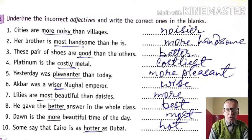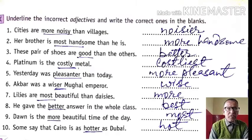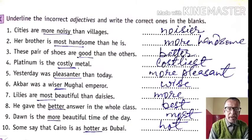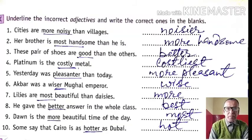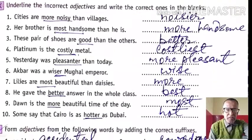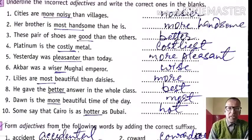Question 4: Platinum is the costly metal. 'The' is used, so we use superlative degree — platinum is the costliest metal. Question 5: Yesterday was pleasant than today. For comparative degree it will be 'more pleasant', so: yesterday was more pleasant than today. Question 6: Akbar was a wiser Mughal Emperor. No comparison is being made here, so we use positive degree — Akbar was a wise Mughal Emperor.